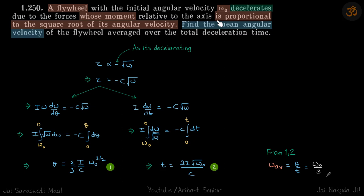Find the mean angular velocity of the flywheel. It's given that torque is proportional to minus root omega. Why minus? Because it is decelerating.